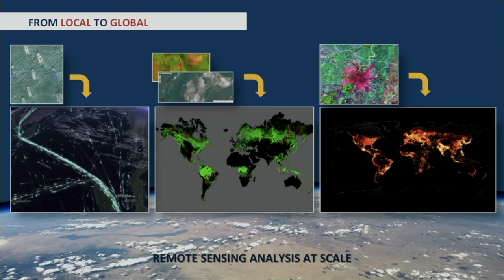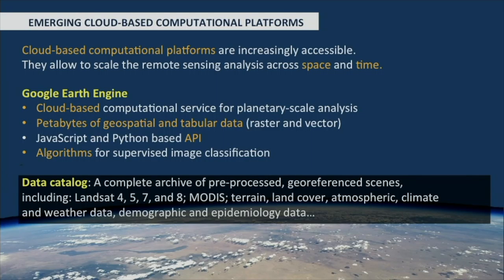Instead of counting individual trees, we want to map ecosystems at global scales. Instead of detecting individual cities or individual infrastructures in a city, we want to map the entire urban land. In the past few years, we see more and more cloud-based computational platforms that allow you to scale up the analysis both across space and time.